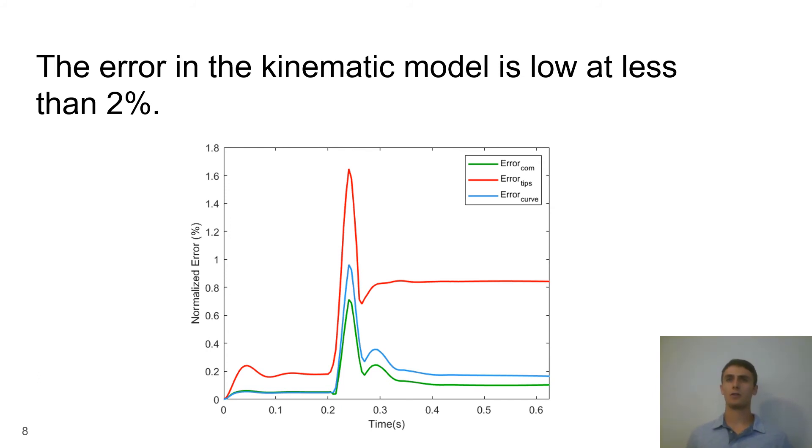When developing the model for the curved sections of the robot we assumed that these had constant curvature and inertial effects likely cause the robot to deviate from our assumption. Also we assumed the straight sections were straight and the robot likely deviates from this assumption when actuating.